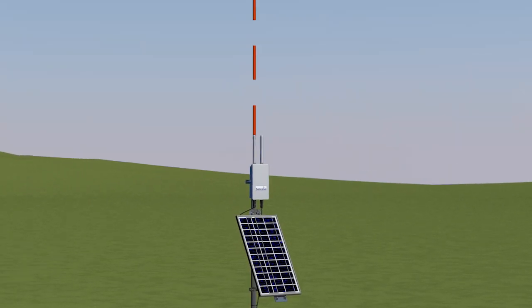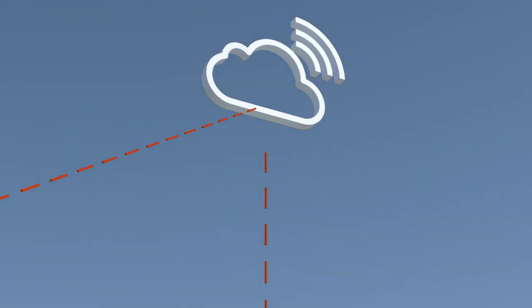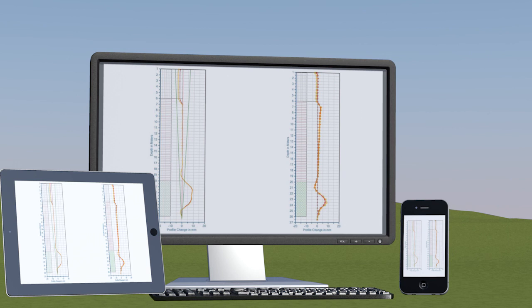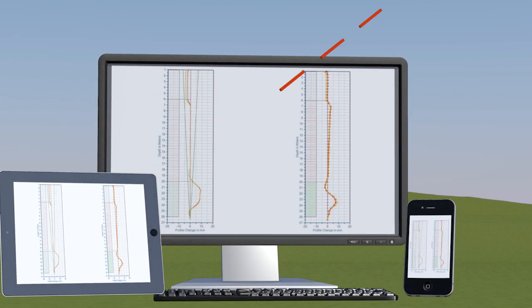The IPIs automatically pick up lateral movements and allow the data to be transmitted through the cellular network to be viewed securely anywhere in the world, on tablet, computer or mobile.